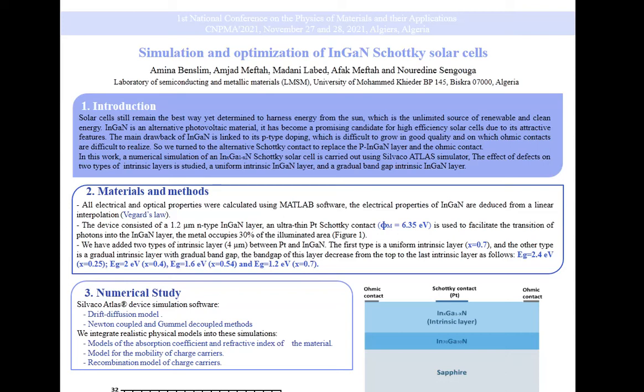Indium gallium nitride is a suitable material for use in photovoltaic devices due to its bandgap energy that can be adjusted by the indium composition and its good electrical and optical property.